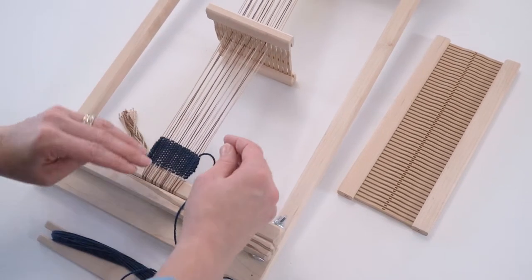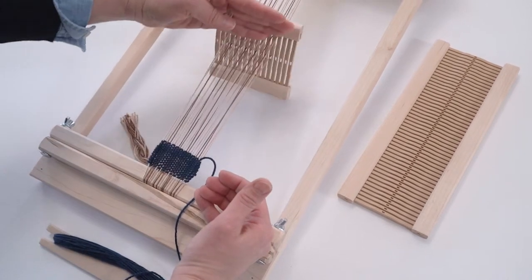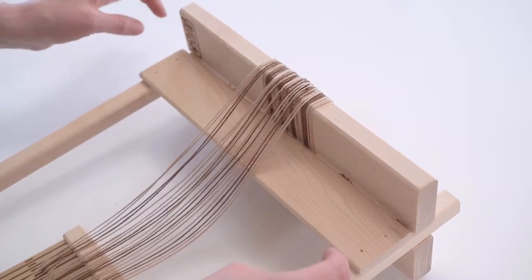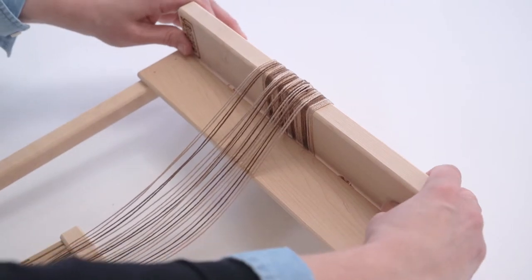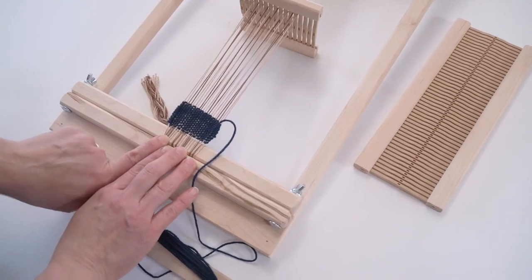Once you have woven up to a certain point, you'll need to advance the warp so that you're taking more of the warp from the back beam and pulling it through this front.